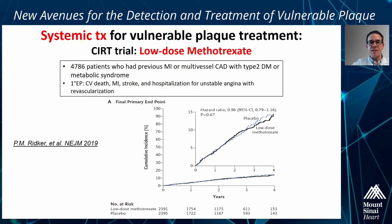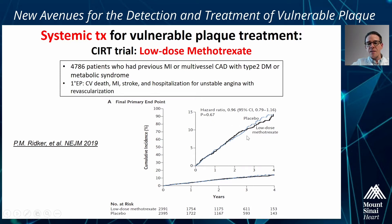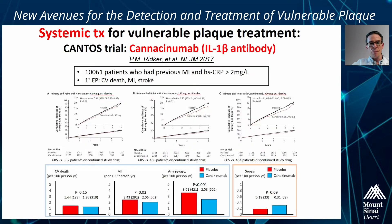I would like to review the situation for low-dose methotrexate, which was studied in 5,000 high-risk patients with previous MI or multi-vessel diabetic disease. Methotrexate compared to placebo did not show any effect on the ischemic combined endpoint throughout four years. So low-dose methotrexate cannot be considered an effective drug to treat vulnerable plaques.